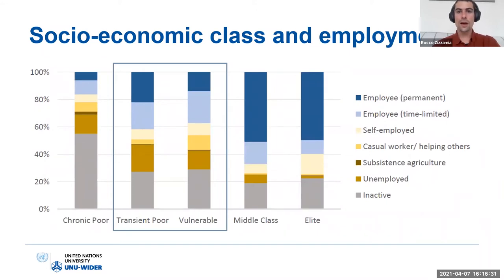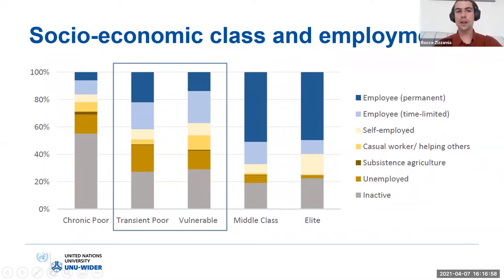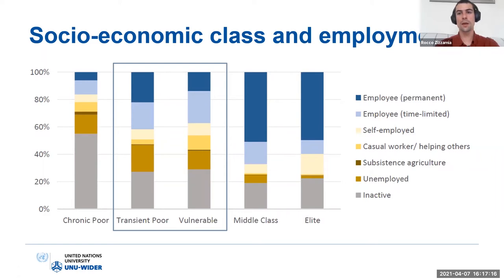A quick snapshot of the labor market characteristics of these groups: the vast majority of the chronically poor are simply excluded from the labor market — economically inactive or unemployed. That's not the case for the transient poor and the vulnerable, whose labor market characteristics are quite similar. A salient point is that a lot of them are employed in highly precarious forms of labor, where they're unable to avail themselves of the labor market protections which characterize the middle class and the elite.